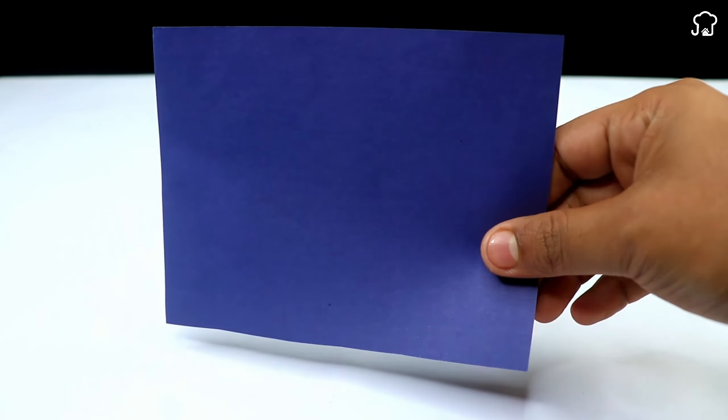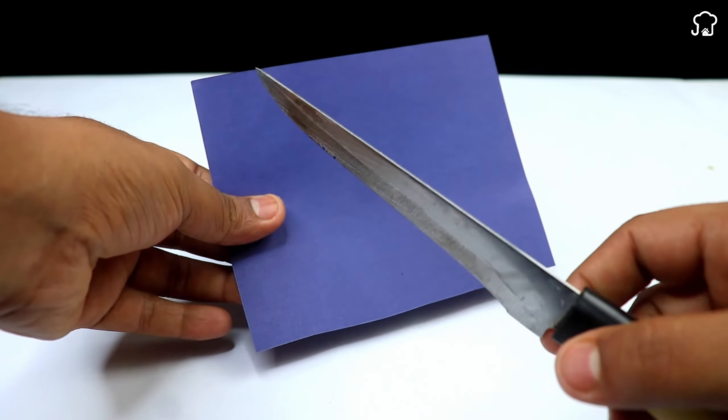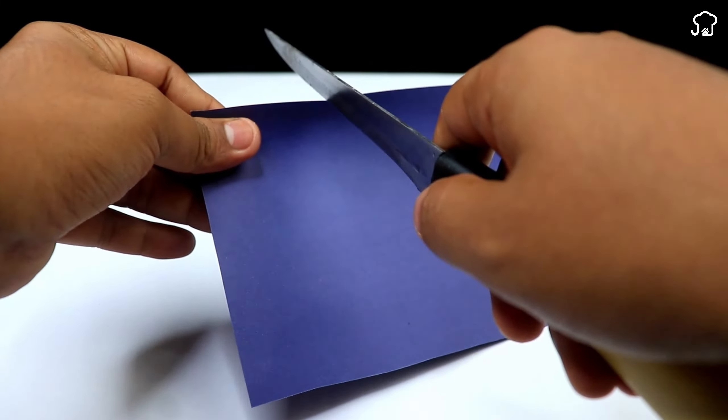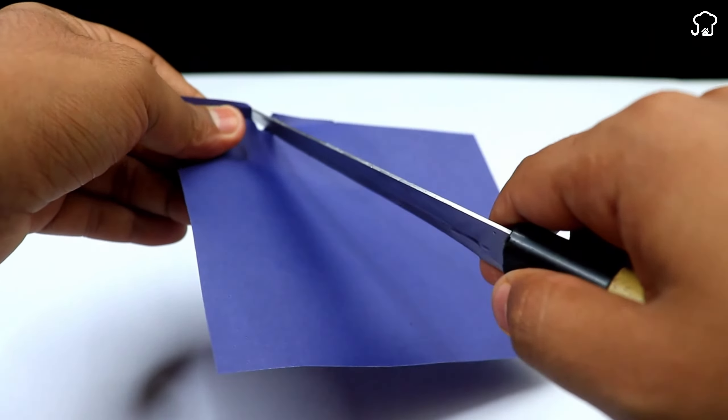First, we will take a blade and check the dullness of the knife. It is important to ensure that the blade does not have a good edge to proceed with sharpening.